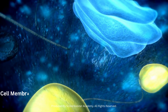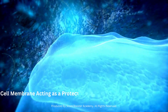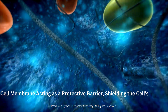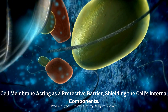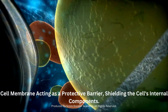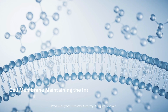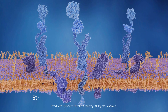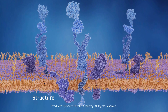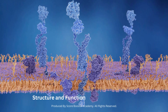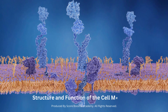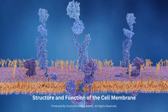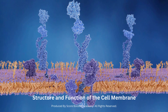The cell membrane acts as a protective barrier, shielding the cell's internal components from potentially harmful substances in the extracellular environment. It helps maintain the internal conditions necessary for cellular function and survival. Understanding the structure and function of the cell membrane is essential for comprehending various biological processes and the overall functioning of living organisms.